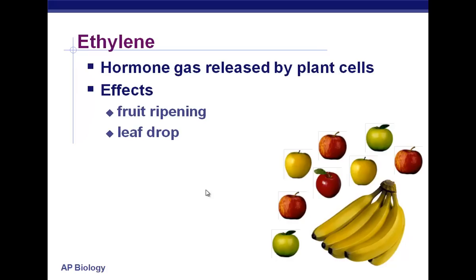Ethylene also affects leaf drop — it encourages the leaf to separate from the stem. Auxin has the reverse effect: auxin helps to keep leaves attached, while ethylene promotes the detachment of leaves. Ultimately, ethylene promotes aging, and part of that aging causes leaves to fall off and causes fruits to ripen.